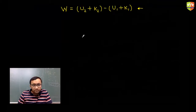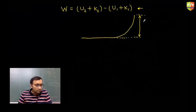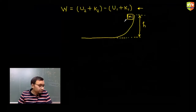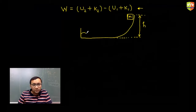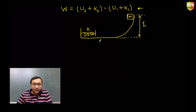So all of you draw this figure. There is a mass m — a spring with spring constant k is there. Mass m is released from rest from a height h as shown in the figure. It slides and compresses the spring of stiffness k. You have to find the maximum compression in the spring.